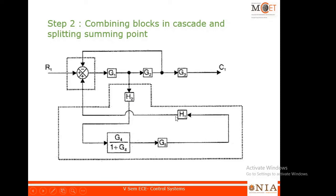I can multiply all four cascaded blocks: H2, G4/(1+G4), G5, and H1. Also, I can split the summer into two points — if this summer has three inputs A, B, and C, the output is A+B−C. I can split it into two summers: one giving A+B, and a second summer adding minus C. This splitting is a simple logical thing done for simplification purposes.